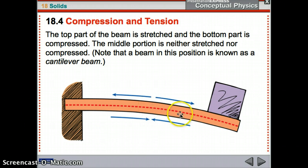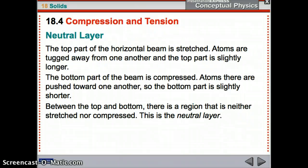This is called a cantilever beam. So that's just a vocab term to know. So in that beam we just saw, the top part's stretched. Atoms are pulled away from one another. It's slightly longer than the bottom part, or the middle. The bottom part is compressed. Things are pushed together. The atoms are shoved closer to each other. So the bottom part is slightly shorter. And then in the middle we have that area where nothing's really happening. That is our neutral layer.